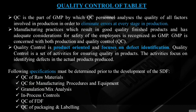The following specifications must be determined prior to development of solid dosage forms: quality control of materials, quality control of manufacturing procedures and equipment, granulation mix analysis, in-process controls, quality control of finished dosage forms, and quality control of packaging and labeling. So quality control is done at every stage in the production.